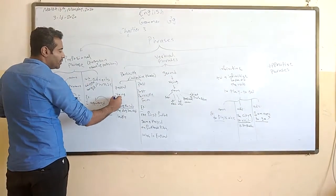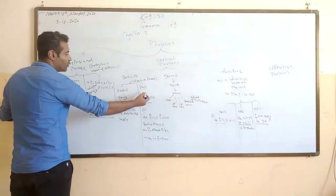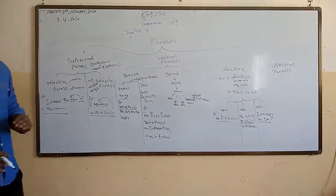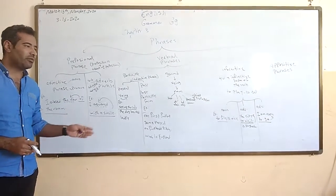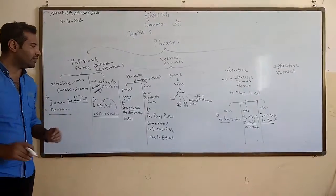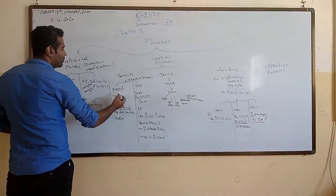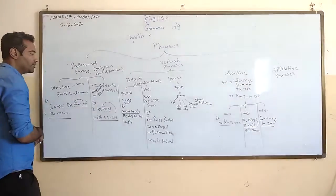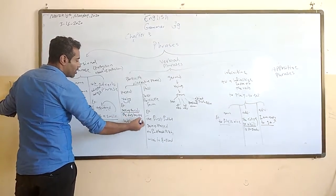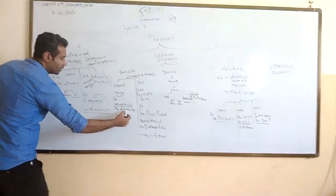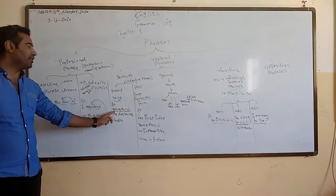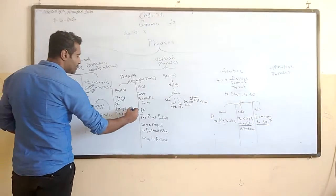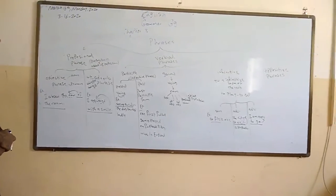The present participle is the verb plus -ING. The past participle is the past participle form — and we know there are regular verbs and irregular verbs. The function of both the present participle and past participle is as an adjective, meaning it modifies a noun or pronoun. For example, 'Seeing the cat, the dog barked loudly.' Here 'seeing' is the present participle, and the whole phrase 'seeing the cat' describes the dog.